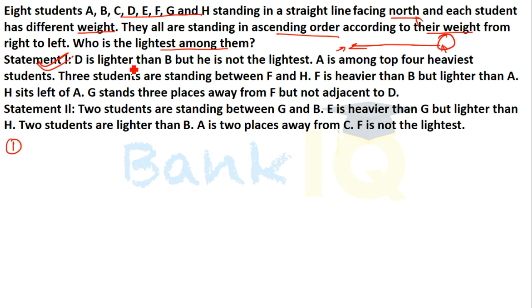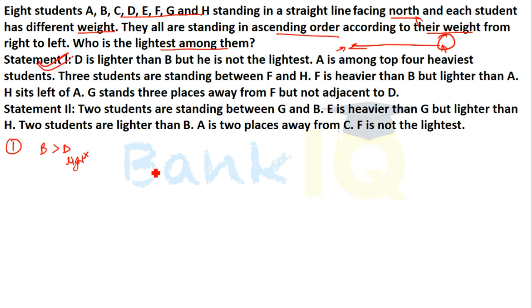Statement 1: D is lighter than B, but D is not the lightest. A is among the top 4 heaviest students.